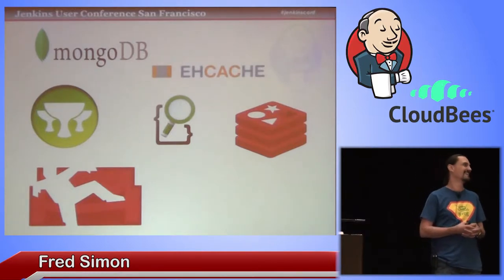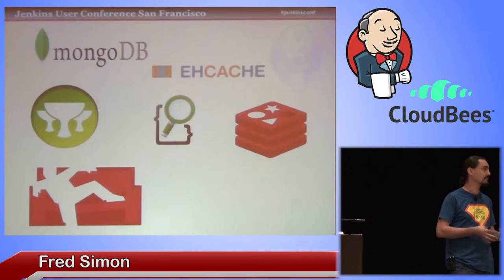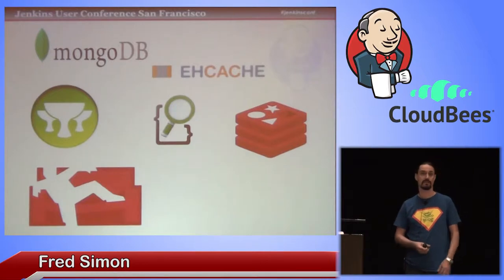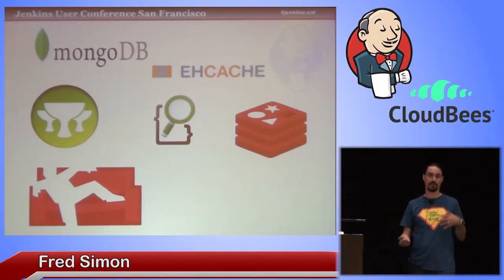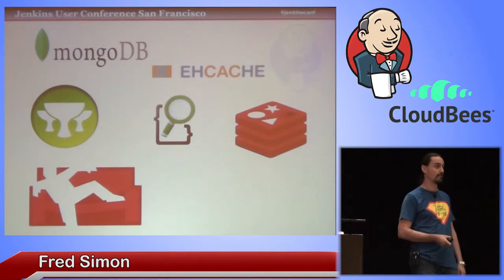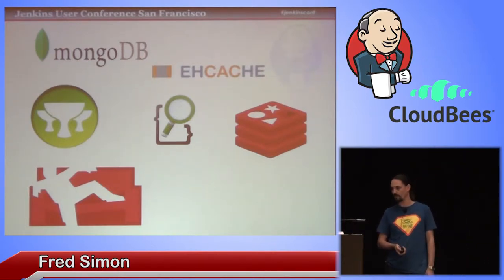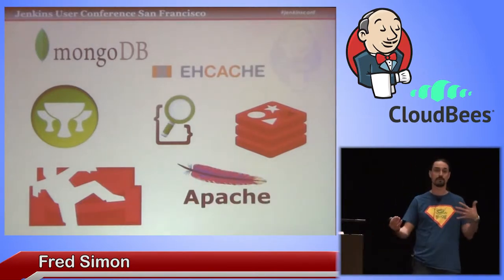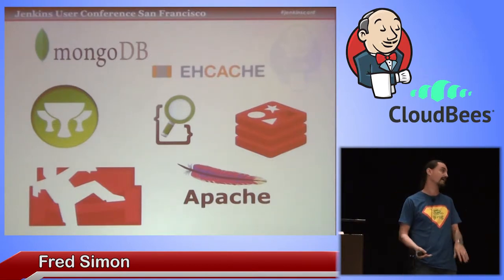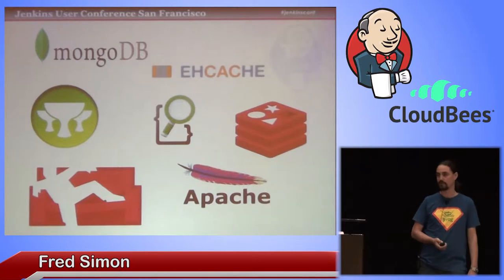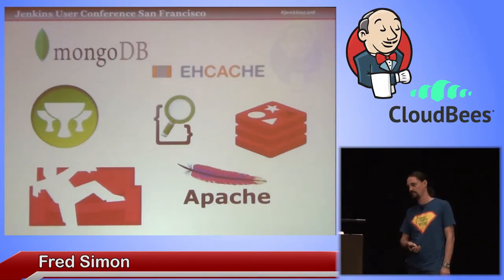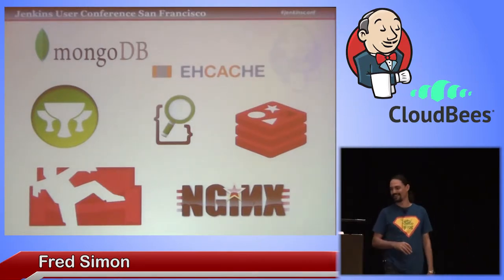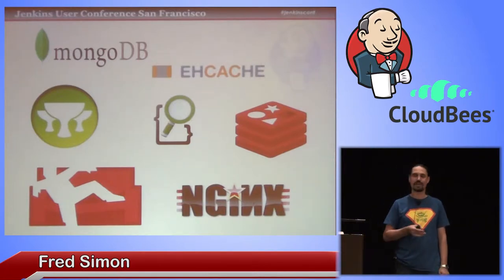We also used Redis — mainly for statistics, so in Bintray you can get real-time statistics about the download of your files. We use it also for task management and task communication between all parts of the system. We're really happy about Redis. Finally, we have a front-end web server to communicate with all the back-end REST APIs and the web UI. We chose Apache HTTP server and then switched to nginx. So: nginx, CouchDB, Grails, MongoDB, EhCache, Elasticsearch, and Redis — this is what we call a multi-component environment.